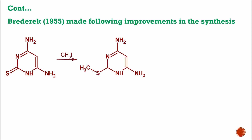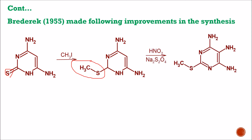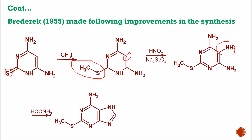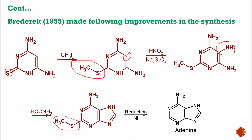Broderick in 1955 made the following improvements in the synthesis. From an intermediate step, he reacted the compound with methyl iodide. After reaction with methyl iodide, the sulfur is attached with an additional methyl group, converting it into a CH3S group. Further reaction in the presence of nitrous acid (HNO2) and sodium dithionate (Na2S2O4) attaches an NH2 group at the fifth position. Further reaction in the presence of formamide causes ring closure, forming the second ring. The only remaining step is removal of the unwanted branch — in the presence of nickel, reduction takes place and forms the final structure of adenine.